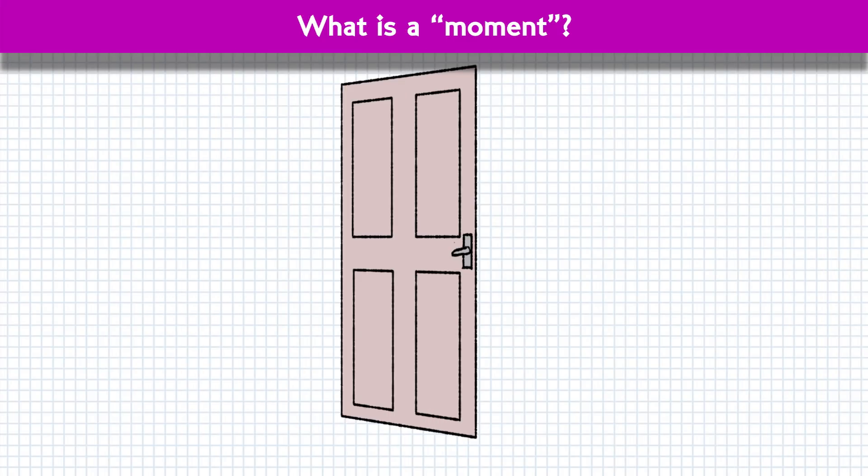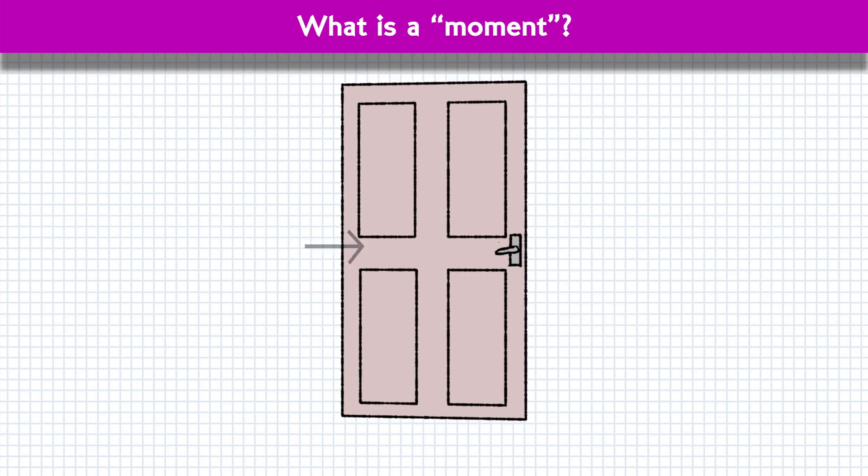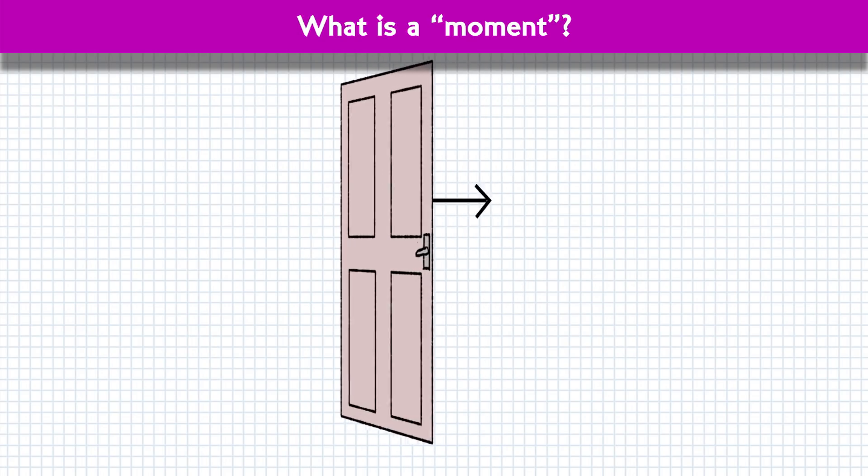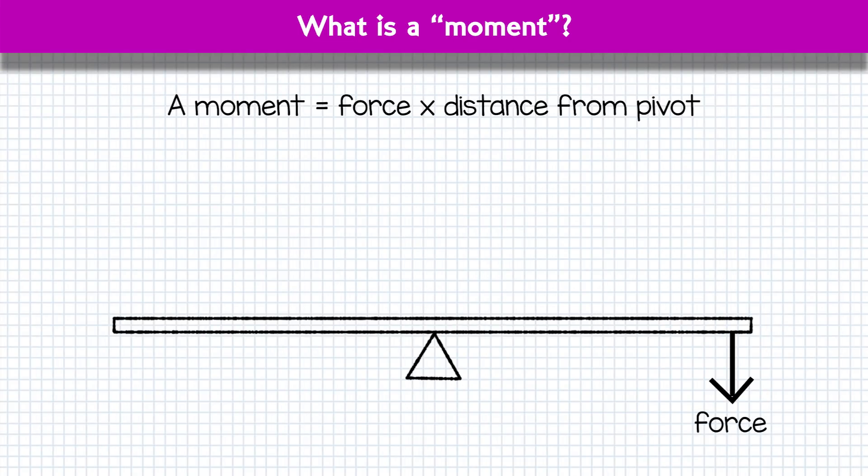Imagine a door. It shouldn't be too hard, there's probably one right behind you. If you apply a force, i.e. push against the door close to the hinge, it's much harder to get the door to turn than if you apply the same force further from the hinge. Just FYI, the actual definition of a moment is the force you apply multiplied by the distance from the pivot you apply it.